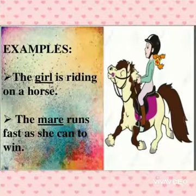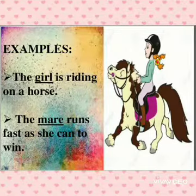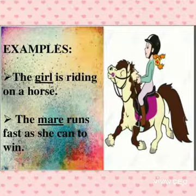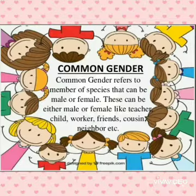Look at the sentences: 'The girl is riding on a horse.' 'The mare runs fast as she can to win.' Girl and mare — both are the feminine gender.